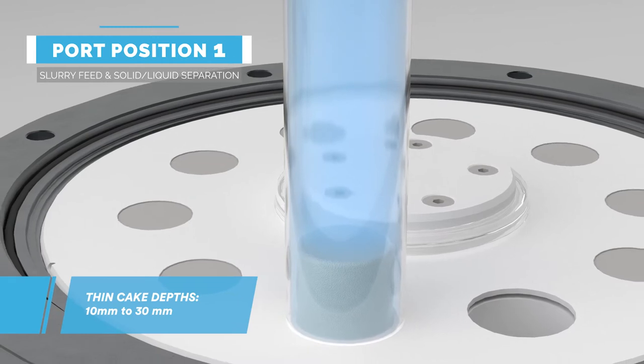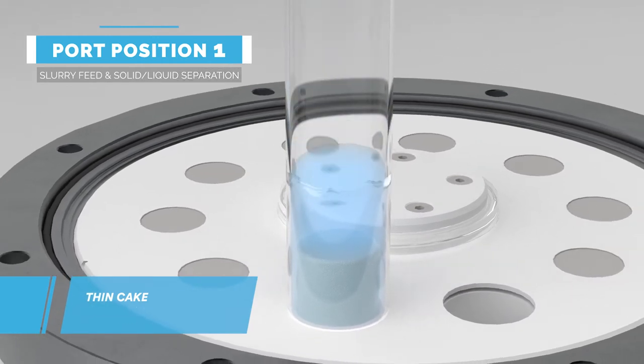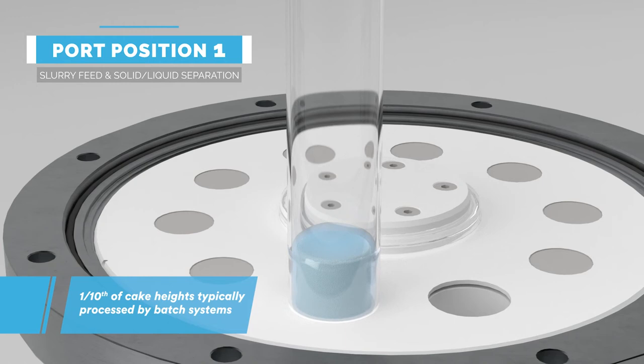After the slurry volume has been dispensed, the outlet valve opens below allowing the vacuum to draw the filtrate through the filter plate.